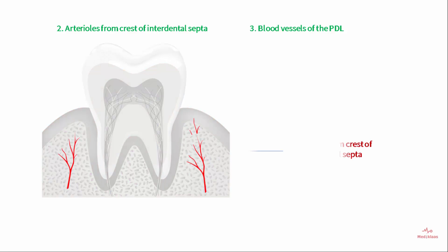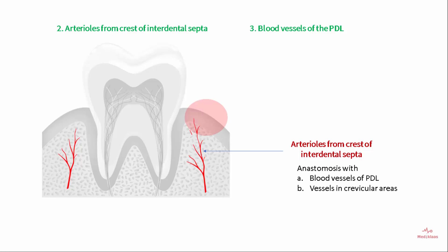The arterioles that penetrate the interdental septa provide blood supply to the interdental tissues of the gingiva. They also anastomose with blood vessels of the PDL and the vessels present in the gingival crevicular area.